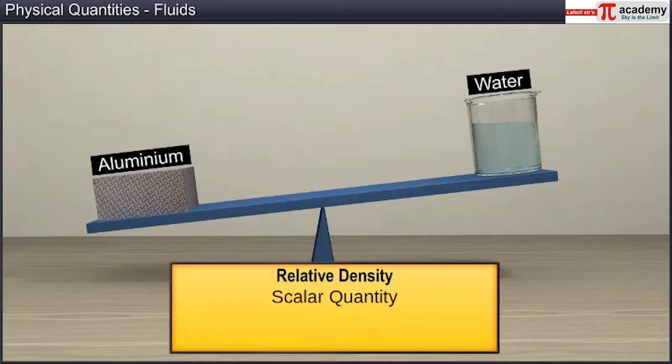Relative density is a scalar quantity. It does not have units, as it is the ratio of similar quantities, and thus it is a dimensionless quantity.